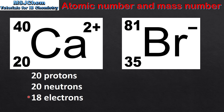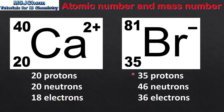Next, the bromide ion. The atomic number of bromine is 35, so that means it has 35 protons in the nucleus. The mass number is 81, so 81 minus 35 gives us 46 neutrons. Because it's a 1- ion it's gained 1 electron, so we add 1 to the number of protons to give us 36 electrons.